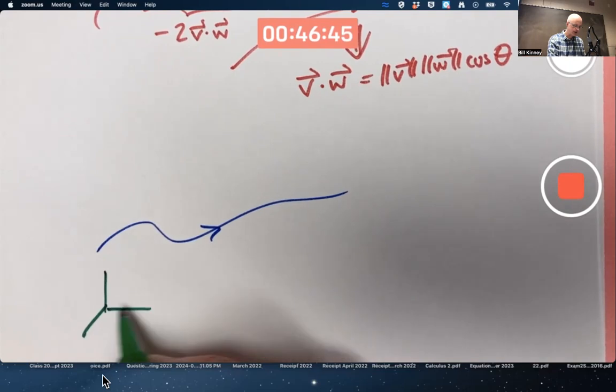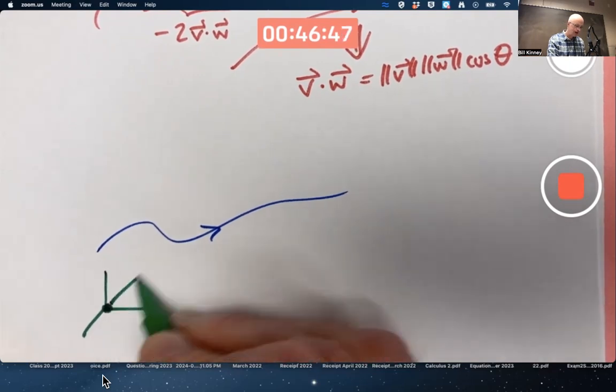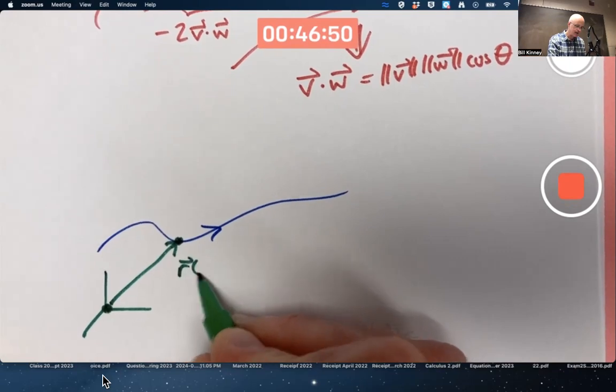Maybe the origin in three-dimensional space is right there. And at any moment in time, you can define a position vector, R of T.